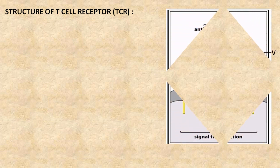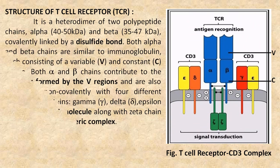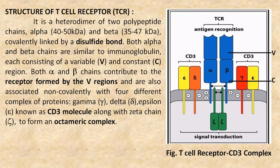Now we will see the detailed structure of a T cell receptor. It is a heterodimer of two polypeptide chains — alpha, which is 40 to 50 kilodalton, and beta, which is 35 to 47 kilodalton — covalently linked by a disulfide bond. Both alpha and beta chains are similar to immunoglobulin,